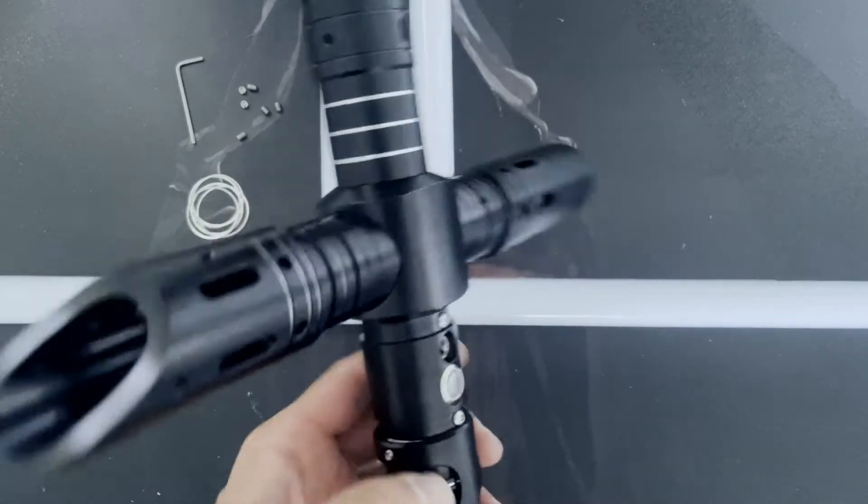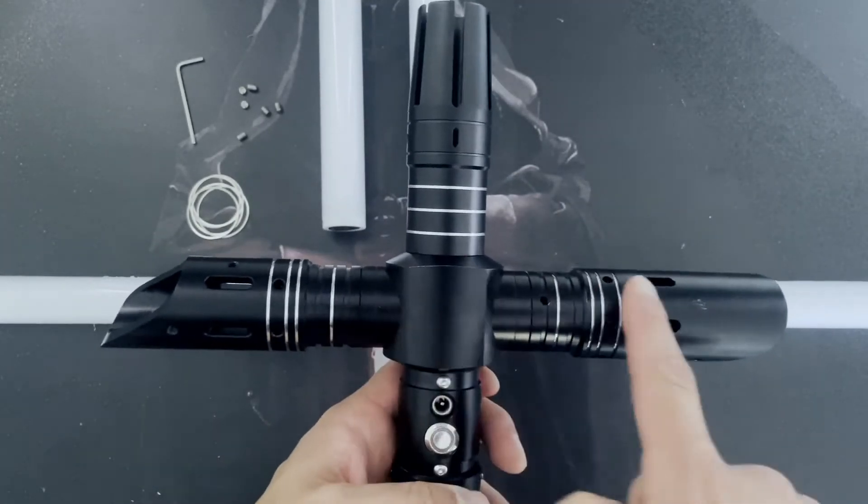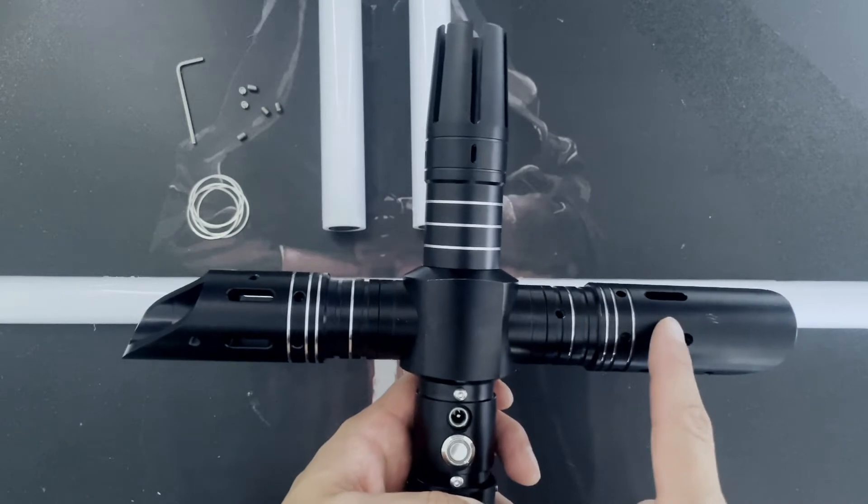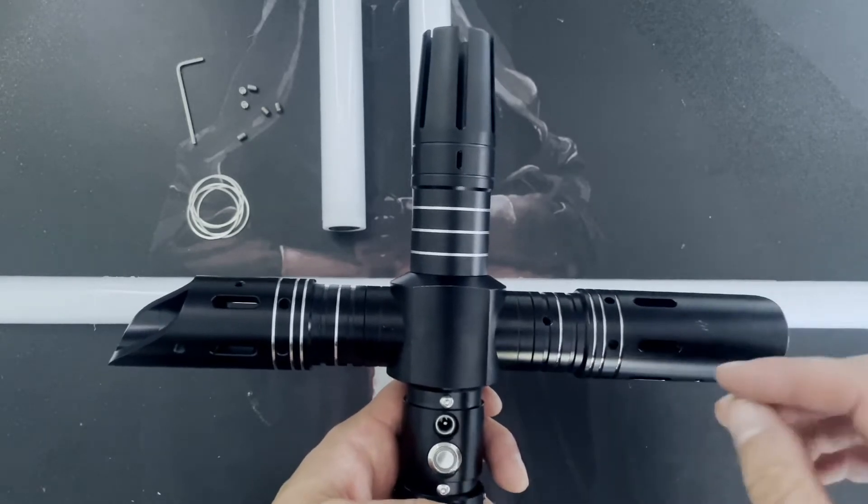You can see it doesn't bother some people which way they're facing, but I know a lot of you want these symmetrical. So if you find that when you've twisted it and screwed it on, it's out of line, then what you need to do is take this back off.